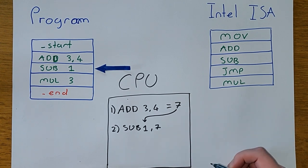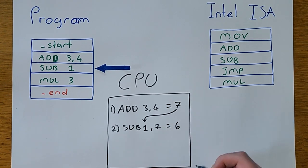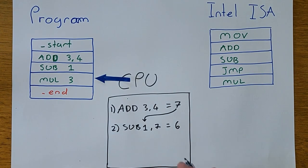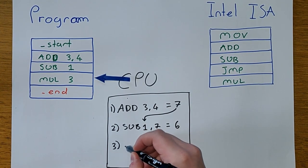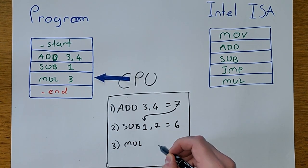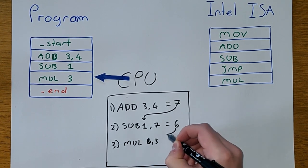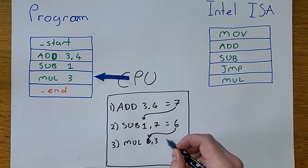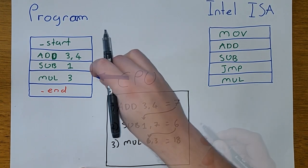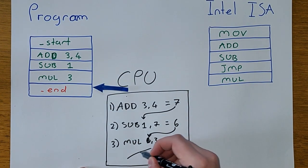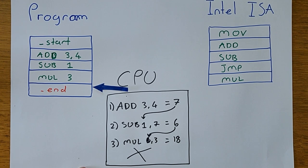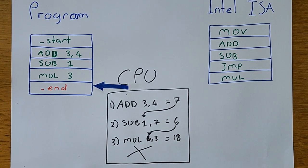Therefore, we take seven minus one to get six, and then move on to the next instruction because we've finished executing. The next instruction multiplies it by three. Because the result is six and we multiply it by three, we get the result 18. We then attempt to move on to the next instruction, but there isn't one, so the processor stops or halts.